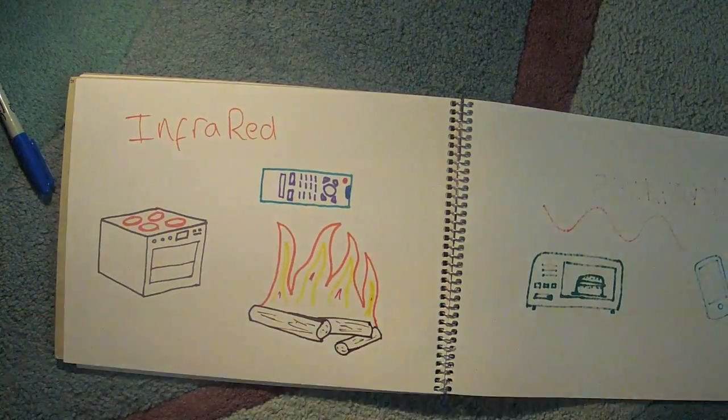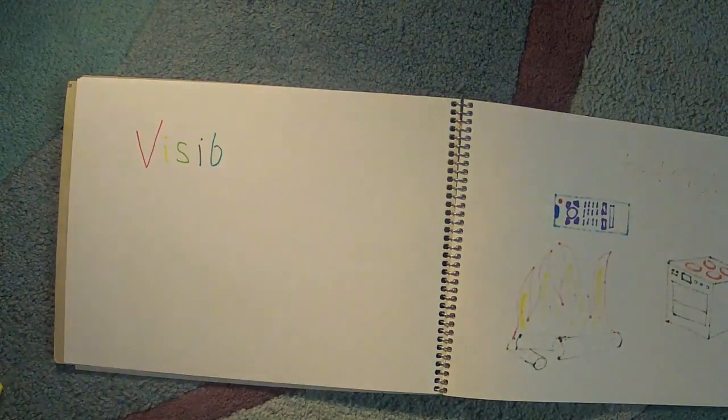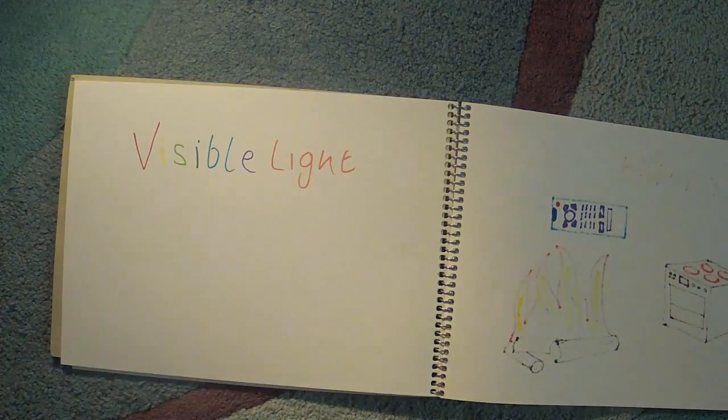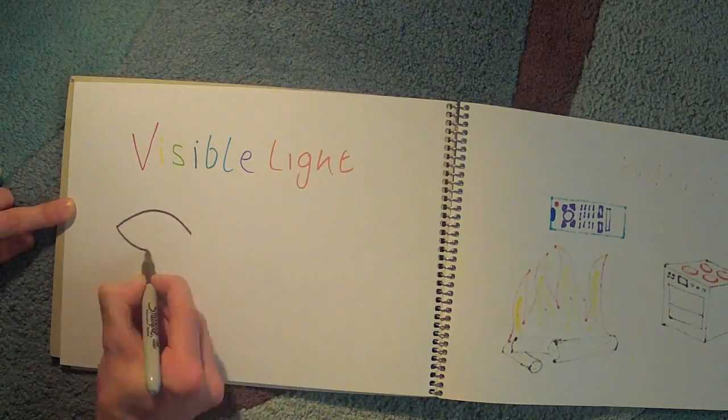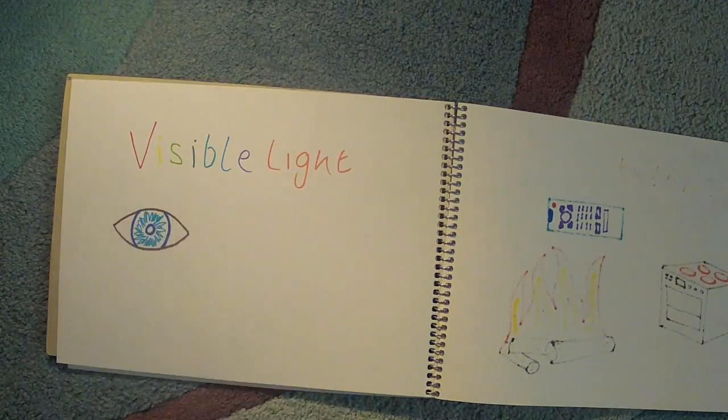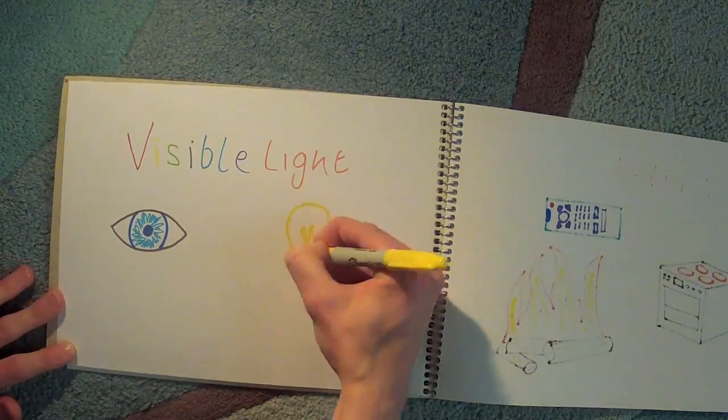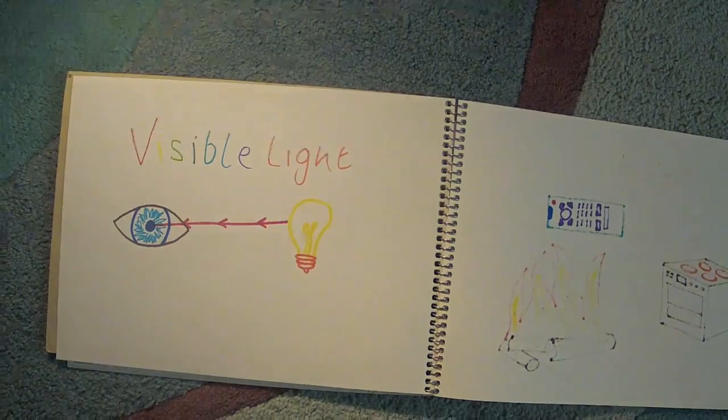Next up is visible light. This is where it gets a little bit more interesting. The visible light spectrum is the only colors that we can see. They range from seven times ten to the minus seven meters and four times ten to the minus seven meters, with red light being 700 nanometers and violet being 400 nanometers. Hence, infrared being below red and ultraviolet being above violet.